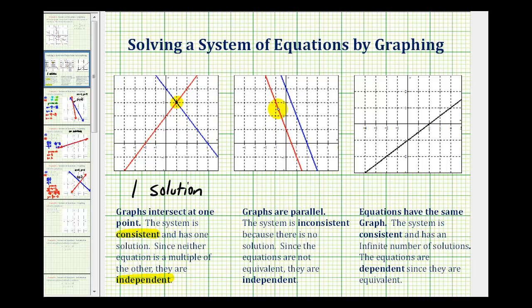If we graph the two lines and there are no points of intersection, then the system has no solutions because the lines have no points in common. This system is classified as inconsistent, but the equations are still independent because we do have different lines.